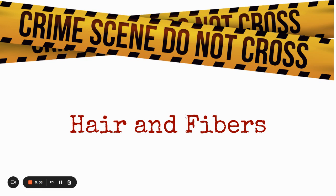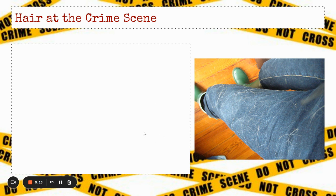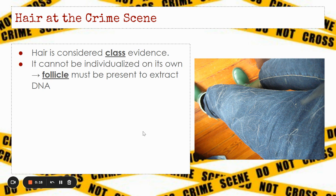These are your notes for the Hair and Fibers Unit of Forensics. Hair at the crime scene. Hair is considered class evidence. We cannot individualize hair on its own unless the follicle is present. If the follicle is present, which is like the skin that the hair grows out of, then we're able to extract DNA, but a hair on its own cannot be individualized.